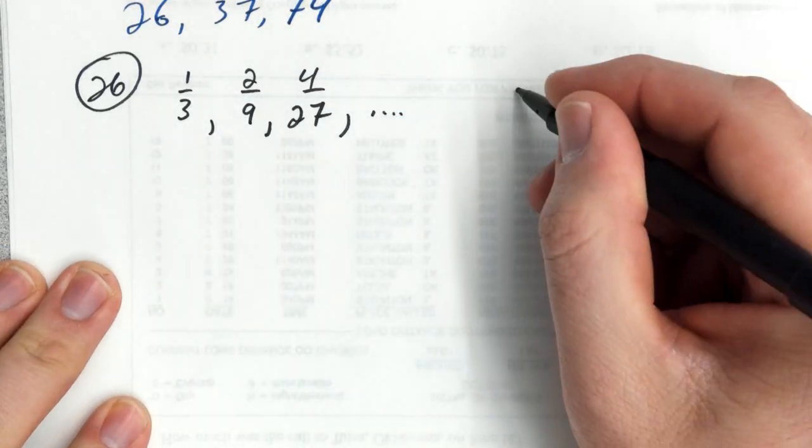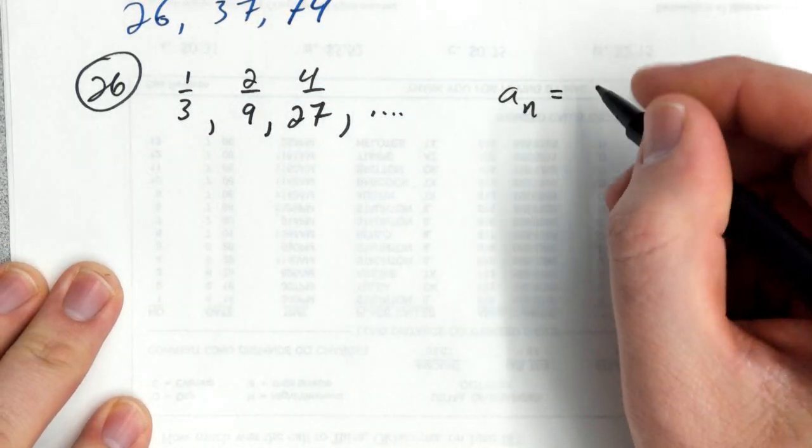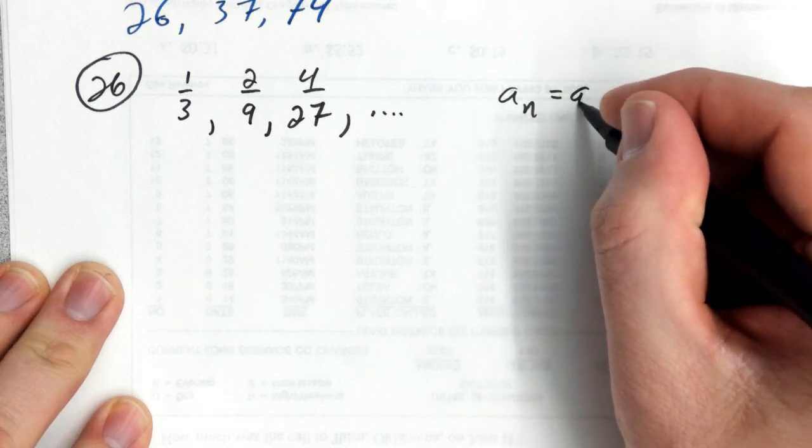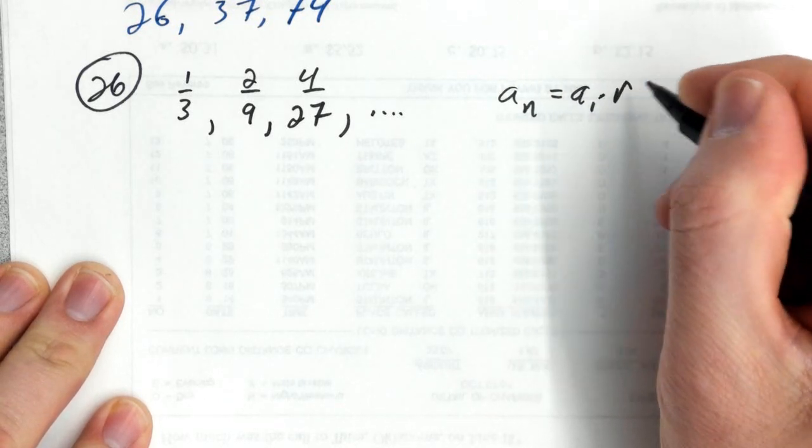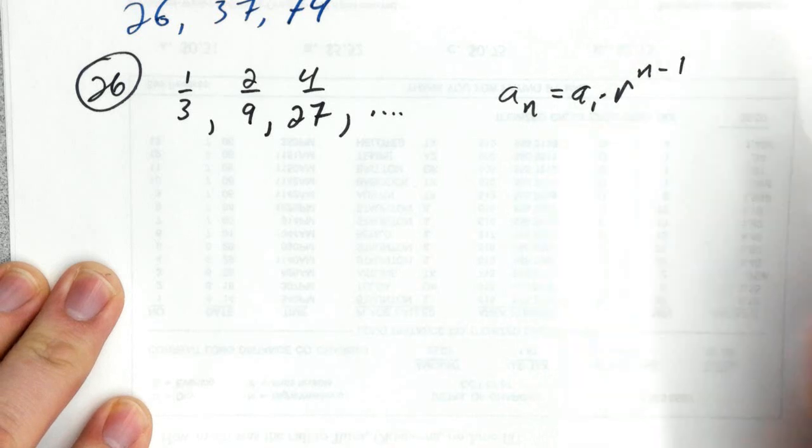The idea is that you can get a rule, which remember takes the form of a sub n equals a sub 1, that's the first term, times r, which is the common ratio, raised to the n minus 1.